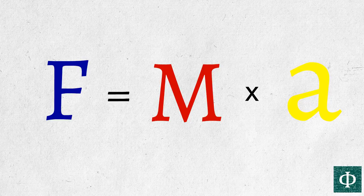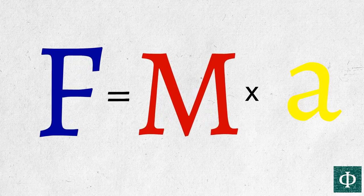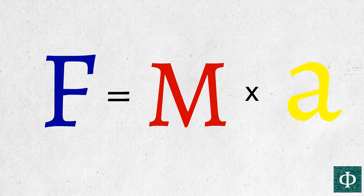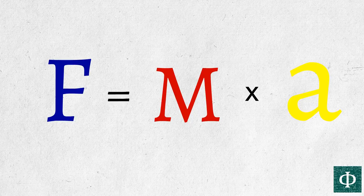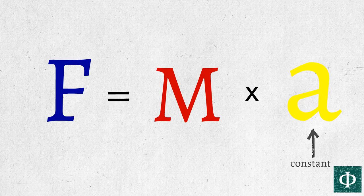So, by changing the mass of a free-falling object, the gravitational force on it also changes by the exact same amount. And according to Newton's law, this leaves the acceleration unchanged.